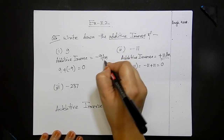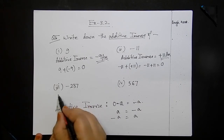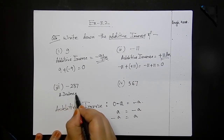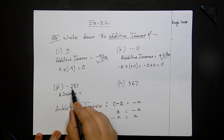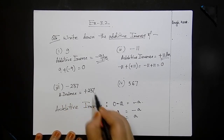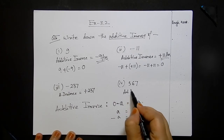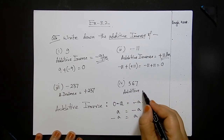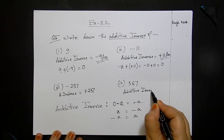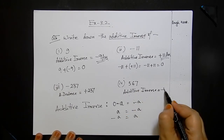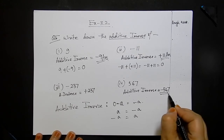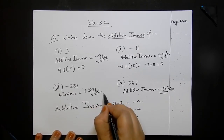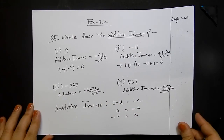Additive inverse of minus 237 is plus 237. Additive inverse of plus 567 — wait, it's minus 567 — the additive inverse is plus 567. Just the opposite sign. Always maintain a rough column in your exercise books and also during your exam.